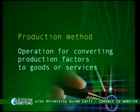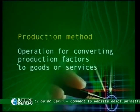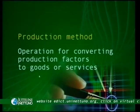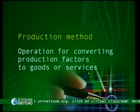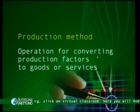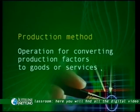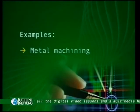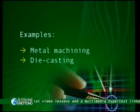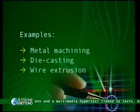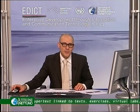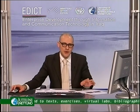When it comes to production methods as an artifact, these methods are operations for converting production factors to goods or services — it's the conversion of inputs into outputs that defines a method. For example, you might have metal machining, die casting, or wire extrusion. These are the basic methods for obtaining specific products through manufacturing processes.